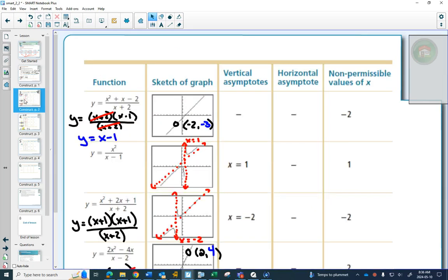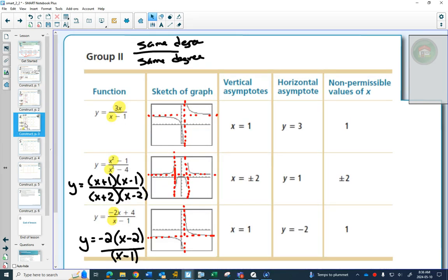Group 2, we looked at when you had the same degree on the top and bottom. And group 2 always had a horizontal asymptote.